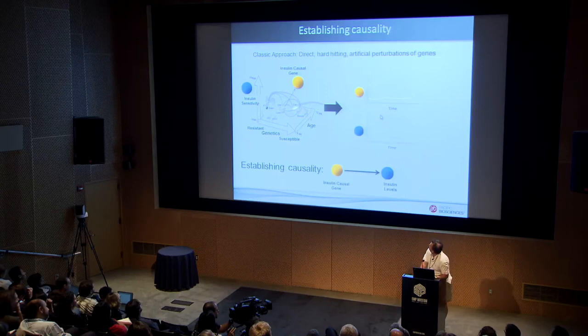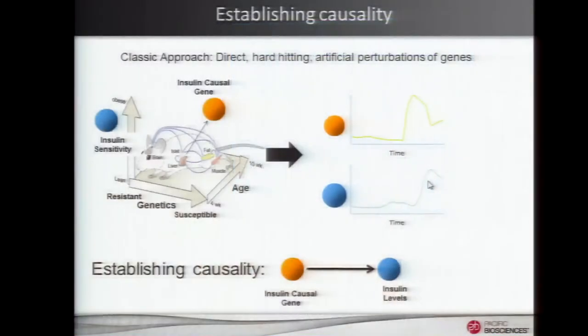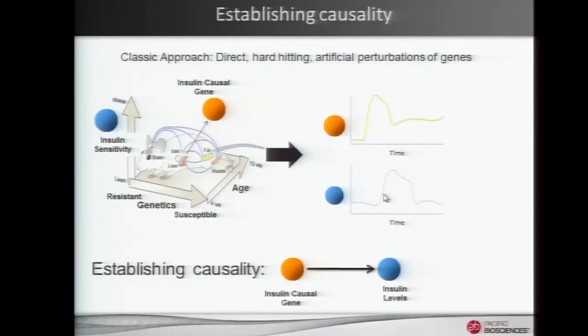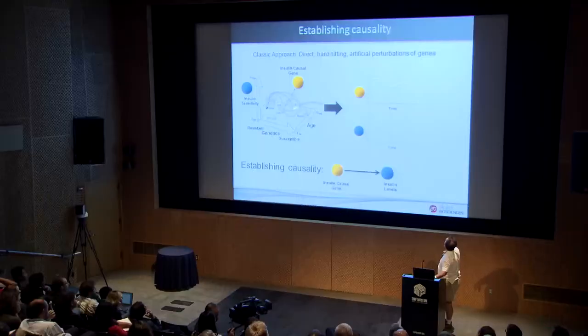How do we establish causality? We set the system up, artificially perturb a gene, then look for a subsequent response in a gene we think is downstream of it. We see that action and infer a causal relationship. The problem with this type of perturbation system — whether chemical, artificial knockouts, or knock-ins — is that it's artificial. When you pound a system in an artificial way, you induce artificial correlations that have no relevance to the system under study.